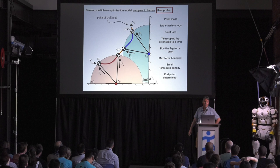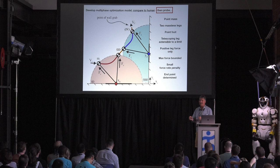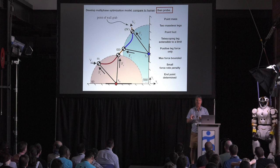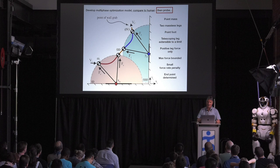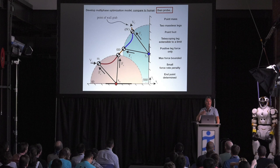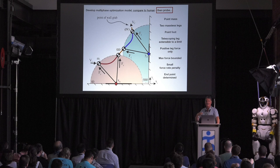We develop a multi-phase optimization model compared to the human, but the objective is not to match the model to the human. What the objective is, is to probe the model, mostly because our subjects don't like us probing them personally. So the idea here is that we've got a point mass model. We're looking at how the legs manage the trajectory of the center of mass. That's the task that we're looking at.